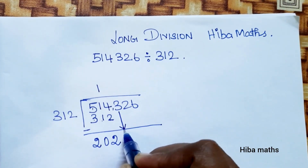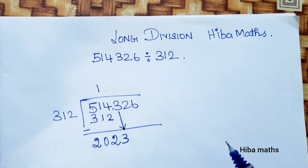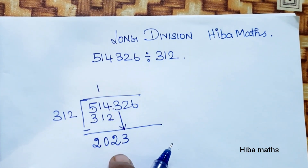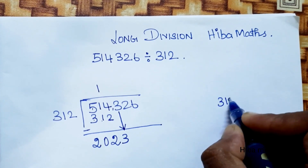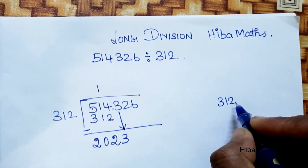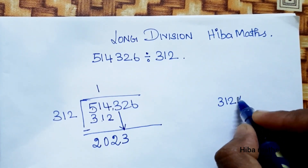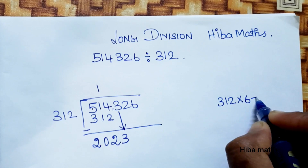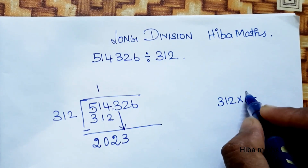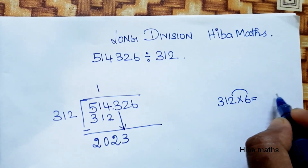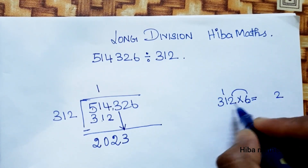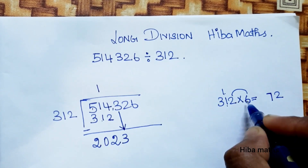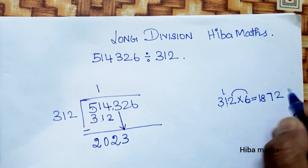Now we have 202. We bring down 3, making it 2023. We will solve: 312 times 6. Six 2's are 12, balance 1. Six 1's are 6, plus 1 is 7. Six 3's are 18.